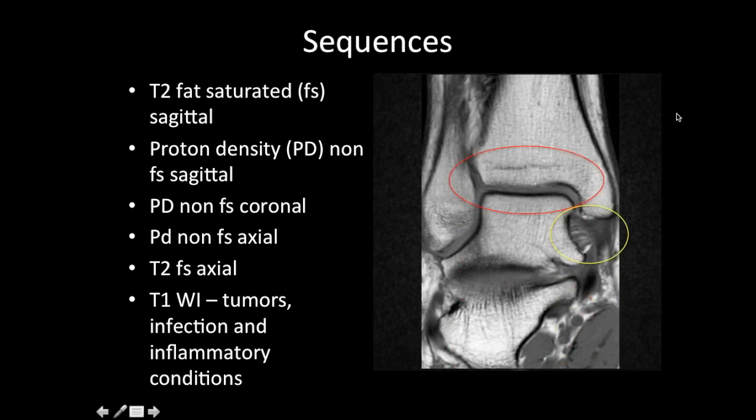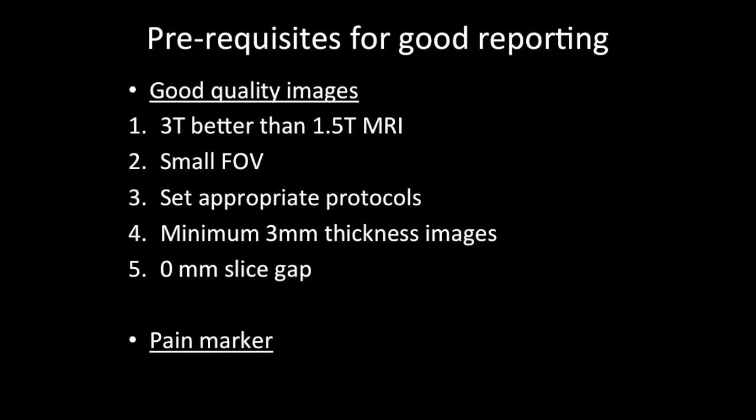Precisely because, as you can see, the cartilage is not well seen on T1 images. Also, the ligaments have poor resolution and it is difficult to identify ligament injuries on T1-weighted images.